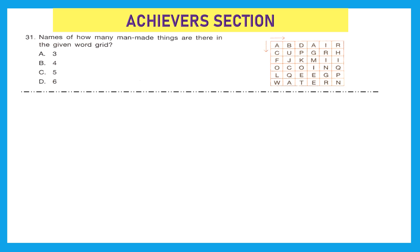Let's move to the last section: the achiever section, where each question holds double marks. Question 31: how many names of man-made things are hidden in the given word grid? Going left to right, I found cup — man-made. Then coin — also man-made. In the last row I can see water, but that is natural so I won't count it. Going top to bottom, I found ring. In total we got three man-made things hidden in the word grid. Option A, 3, is the right answer.